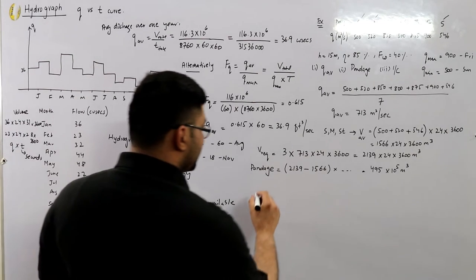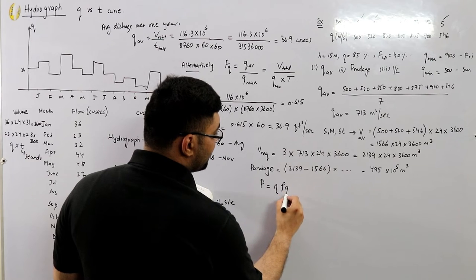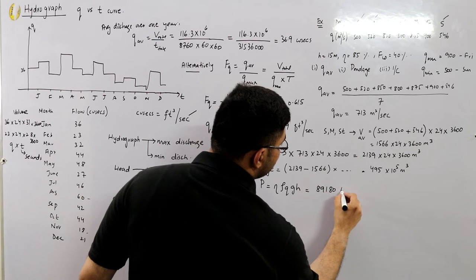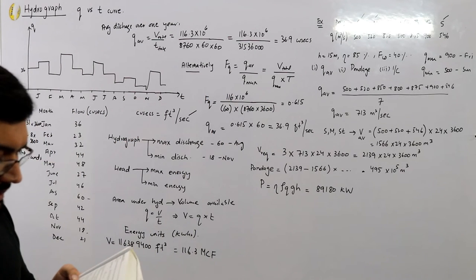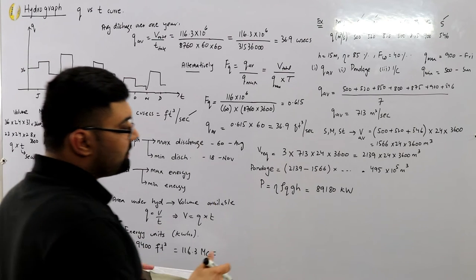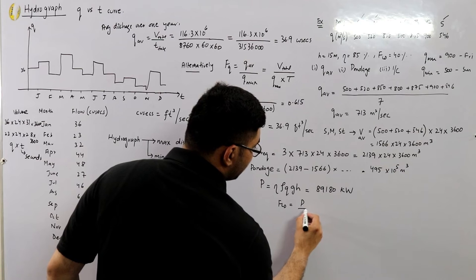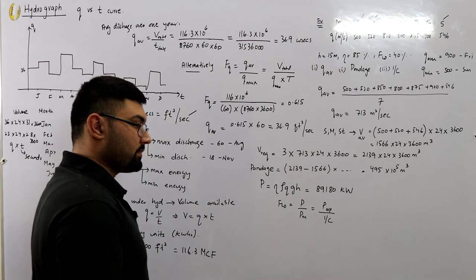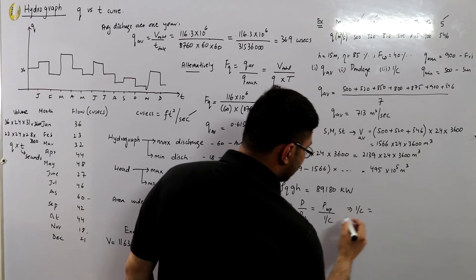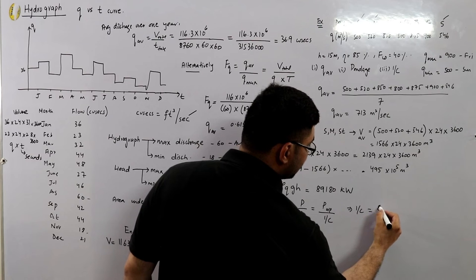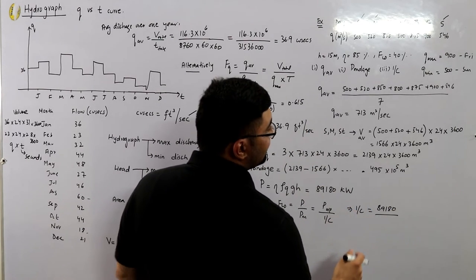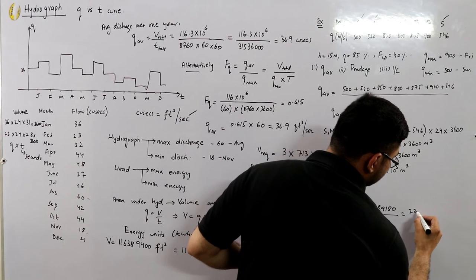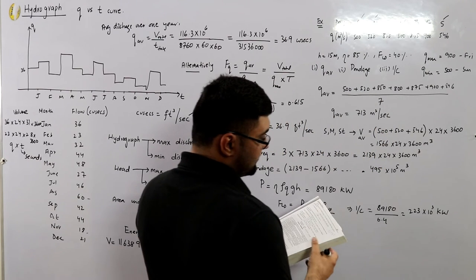For the installed capacity, the output power is: P = η × ρ × Q × g × h = 89,180 kilowatts. The load factor equals average power divided by maximum demand (installed capacity), so: installed capacity = output power / load factor = 89,180 / 0.4 = 223 × 10³ kW = 223 megawatts.